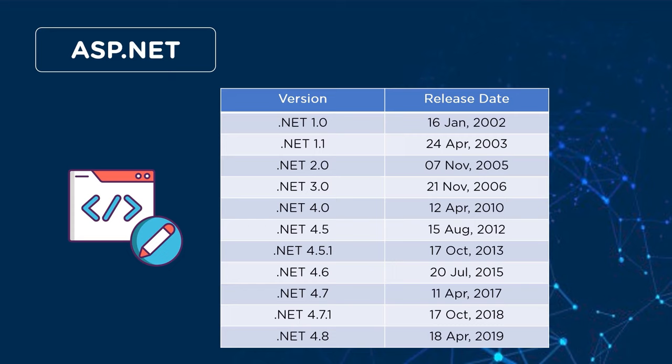After .NET 4.5.1, .NET 4.6 was released on July 20th, 2015, with Entity Framework and Bootstrap features. Then on April 11th, 2017, .NET 4.7 was released to support TLS (Transport Layer Security) protocol. On October 17th, 2018, .NET 4.7.1 was released adding Secure Hash Algorithm support for TLS. On April 18th, 2019, the current version, .NET 4.8, was released with web forms and compiler features.